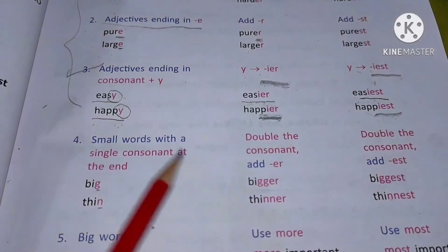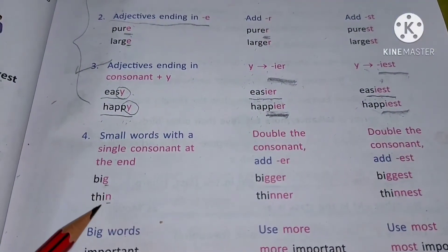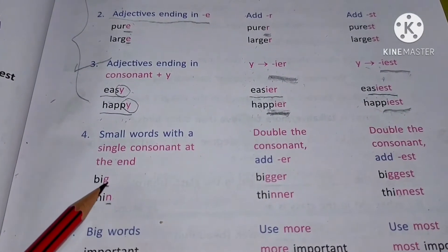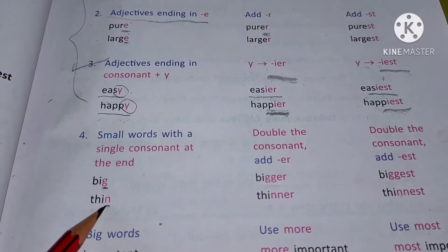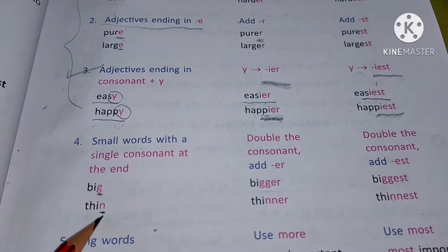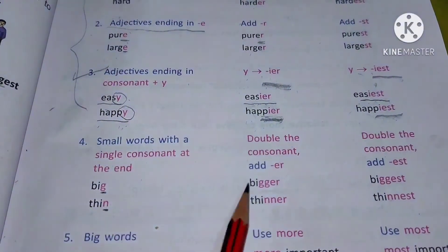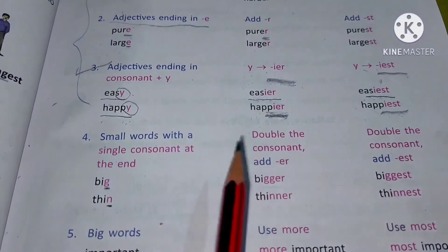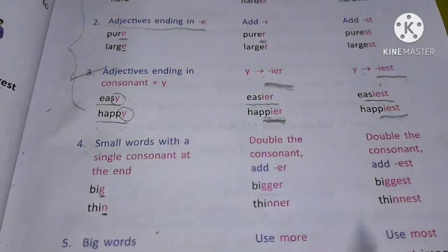Small words with a single consonant at the end. Aise words jo consonant mein end karre ho. See, big - big and g is your consonant. Thin - thin and n apka consonant. G and n are your consonants. Ab uske liye kya rule hai in comparative aur superlative mein? Just keep in mind: double the consonant.